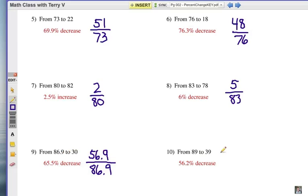And finally, in number 10, the difference here is 50, and you're going to divide that by the original amount of 89, and of course, move your decimal point, 56.2 percent decrease.